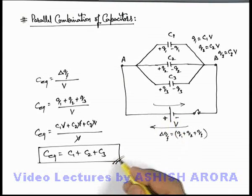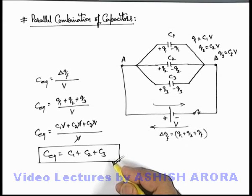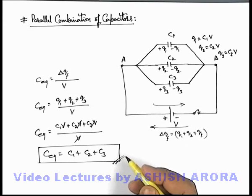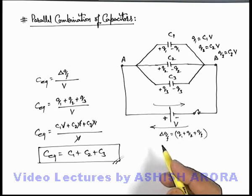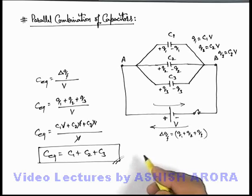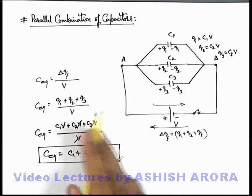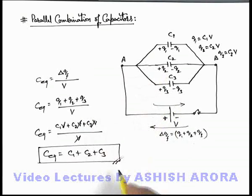You can also keep in mind like this was the result we have used in series combination of resistances. Whenever some resistances are connected in series, their equivalent resistance is given as the sum of the individual resistances. Whereas in case of capacitors for parallel combination we are using this result. Always remember it, because there are many applications you are going to see in future.